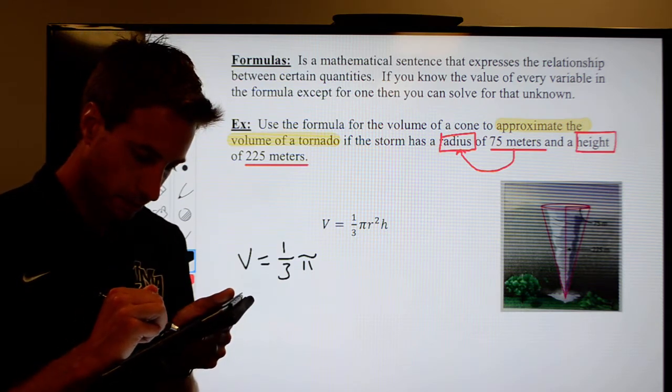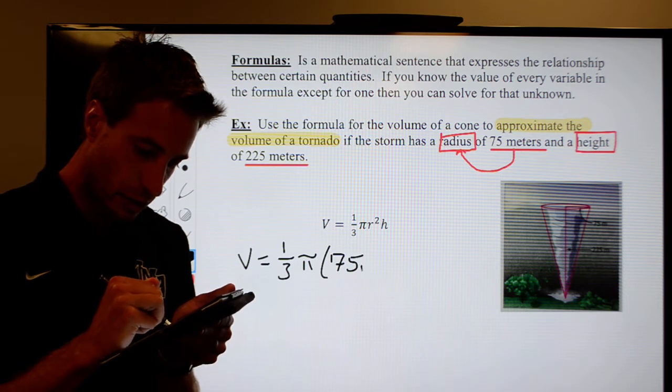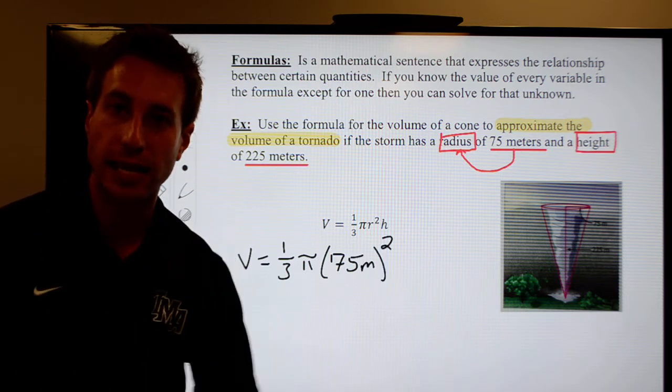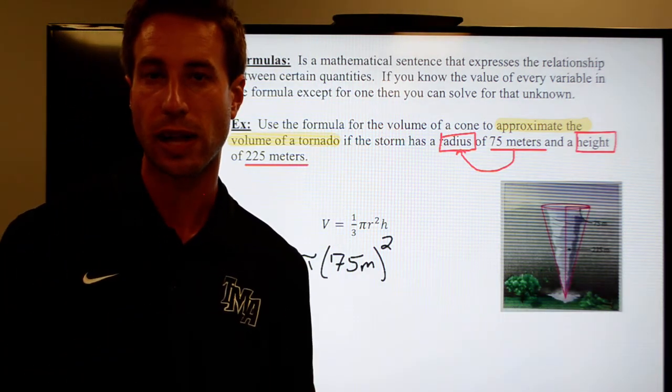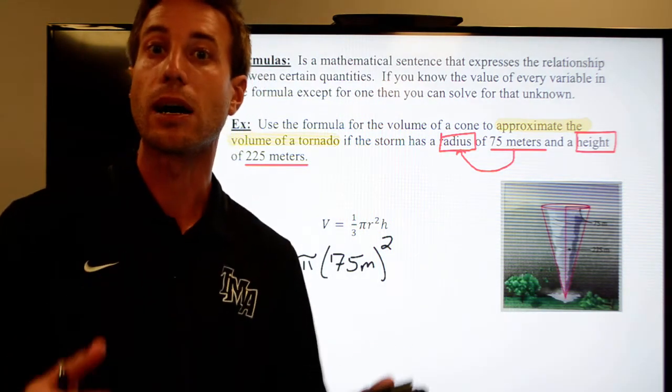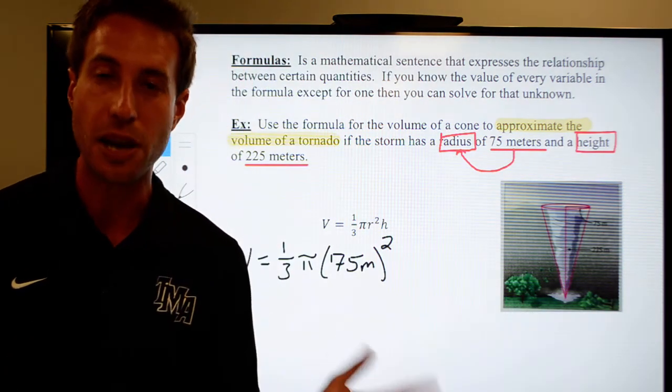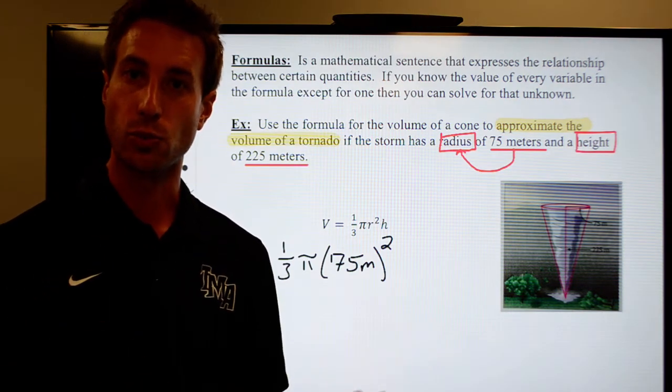R, we said, was 75 meters. Do not forget your units. When it comes to other sciences like biology, chemistry and physics, when you're doing math in those classes, your answers only have meaning because of the units, right? A number in chemistry means nothing unless it has units with it.